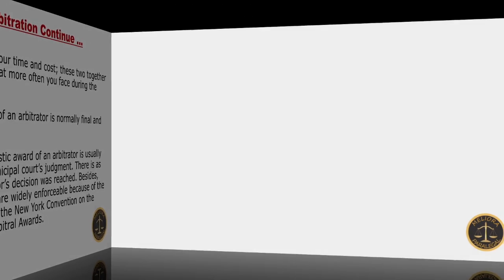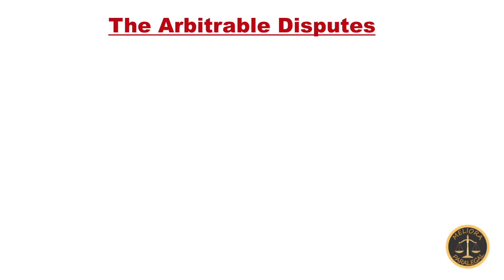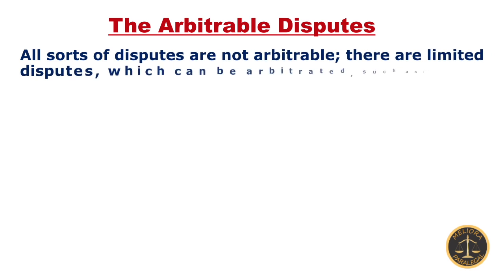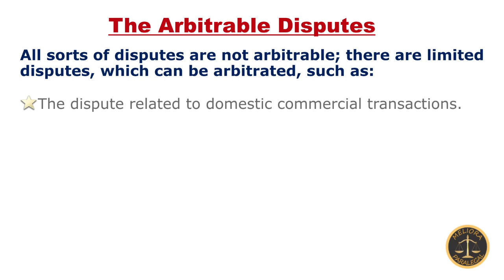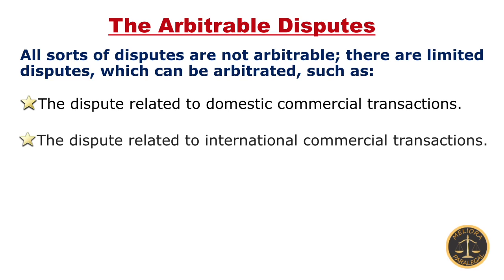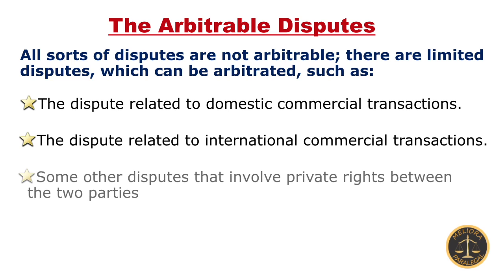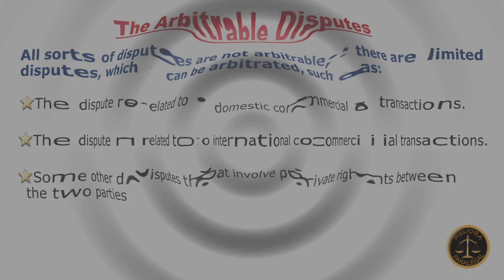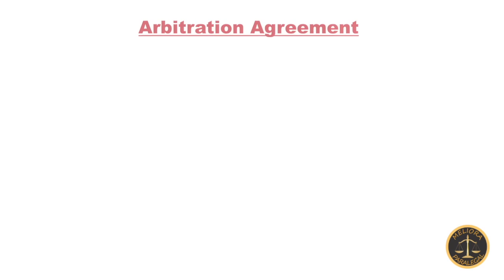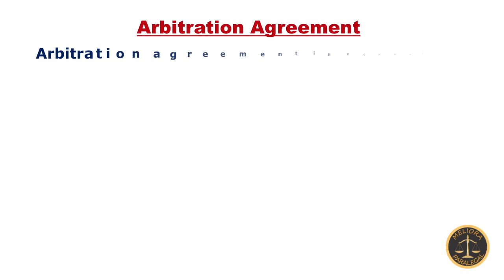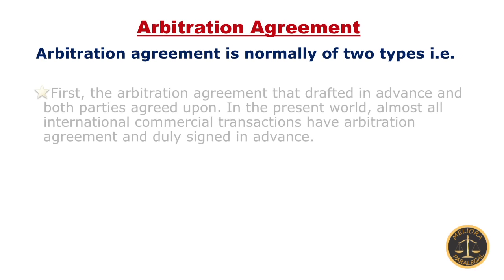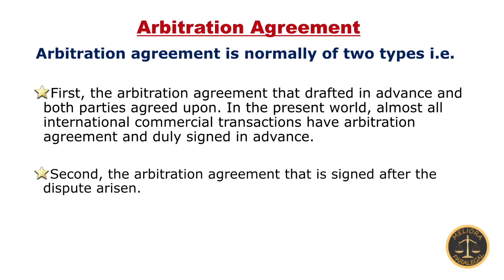Now, come to arbitrable disputes. Not all disputes are arbitrable; rather, it is largely restricted to disputes related to trade and commercial transactions. As for the arbitration agreement, it is of two types: first, drafted in advance while making the agreement of commercial transactions; second, entered into after the dispute arises.